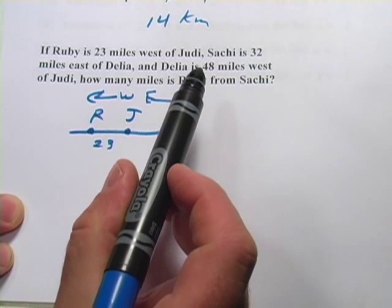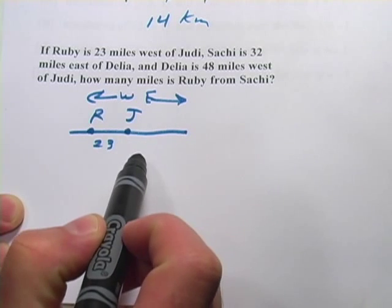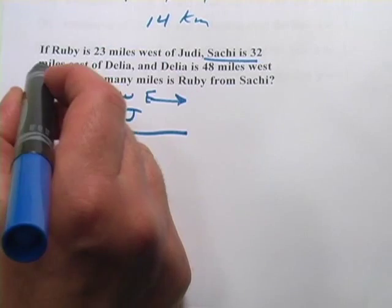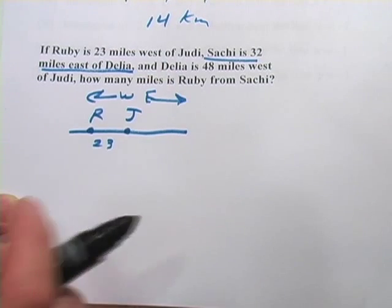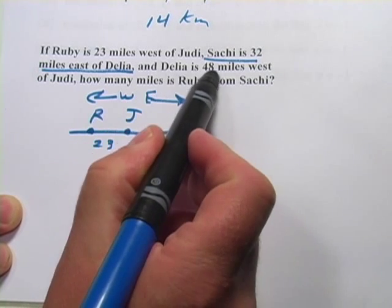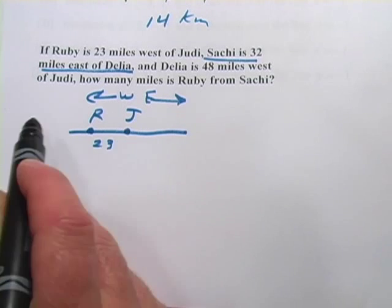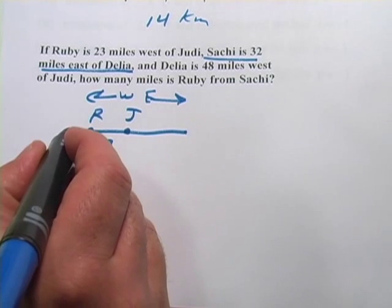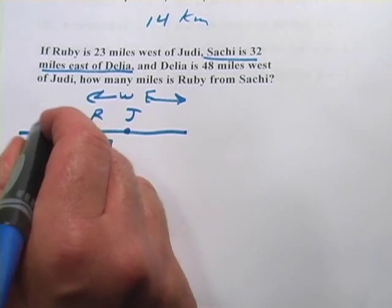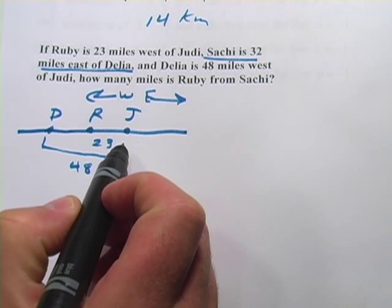The tricky part is that the next phrase says Saatchi is 32 miles east of Delia, and I don't really know where to put that because I don't see how it's related to Ruby or Judy. So I'm going to put that on hold and see if there's anything else in the problem that helps. The next part says Delia is 48 miles west of Judy. I have Judy on here, so Delia is 48 miles west in this direction. Let's say this is Delia, and this distance is 48.